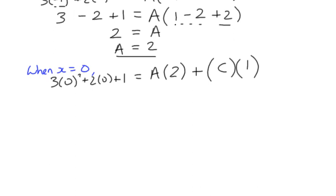So simplifying all that, the left-hand side, I've got a 1 equals 2A plus c. I know that A is 2, so 2A is going to be 4. And by solving that in whatever way, subtract 4 from both sides, c is going to have the value negative 3.